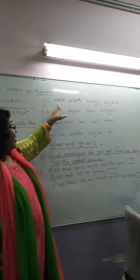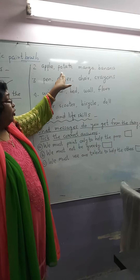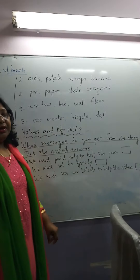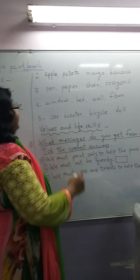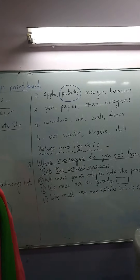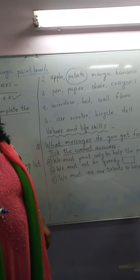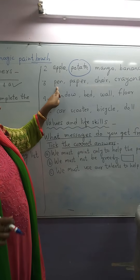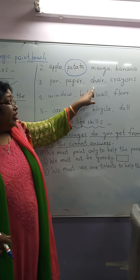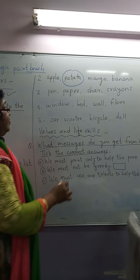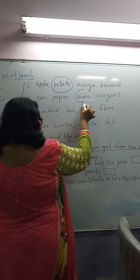Second: apple, potato, mango, banana. The odd one is potato, because it is a vegetable and not a fruit. Third: pen, paper, chair, crayons. And the odd one is chair.